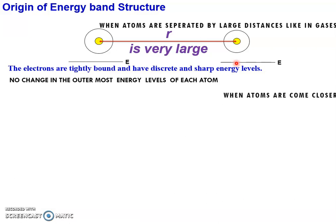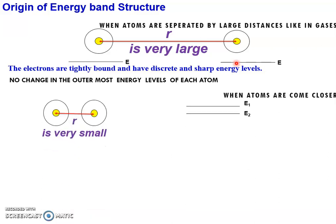Whenever two atoms come closer, we can observe an interaction between the outermost energy levels of the atoms. So whenever R is decreasing, the interaction comes into picture and we can see the splitting of the outermost energy level into two energy levels in the case of two atoms.